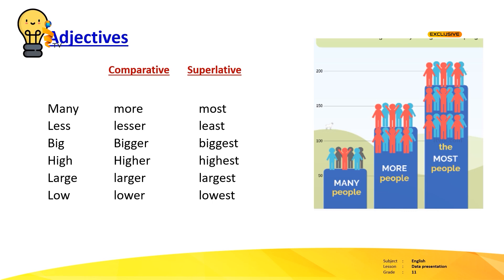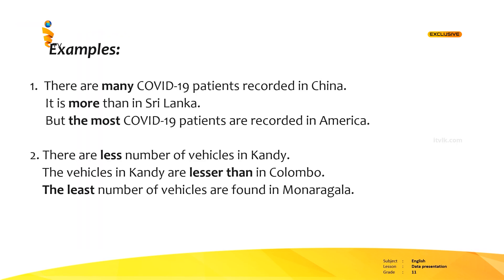You can see the picture on the right-hand side: many people, more people, the most people. If the adjective is 'less', the comparative is 'lesser' and the superlative is 'least'. Let's see how to apply these adjectives in a sentence. Example 1: There are many COVID-19 patients recorded in China. It is more than in Sri Lanka. But the most COVID-19 patients are recorded in America. Example 2: There are less number of vehicles in Kandy. The vehicles in Kandy are lesser than in Colombo. The least number of vehicles are found in Monaragala.